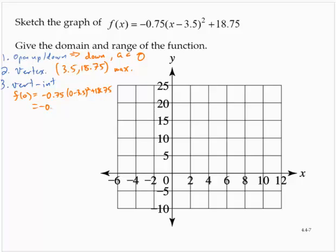Order of operations: negative 0.75 times (negative 3.5) squared plus 18.75. 3.5 or negative 3.5 squared is 12.25. So I got negative 0.75 times 12.25 plus 18.75.